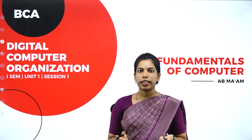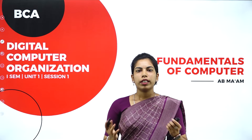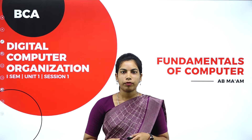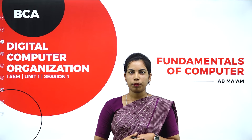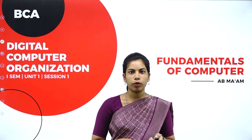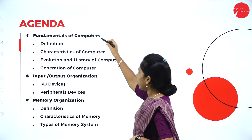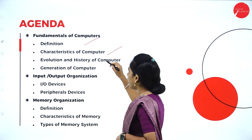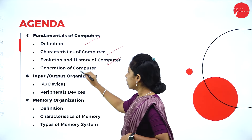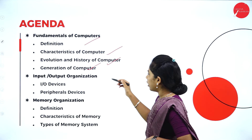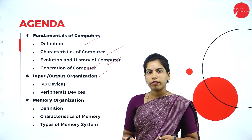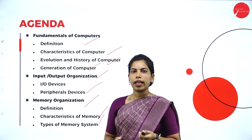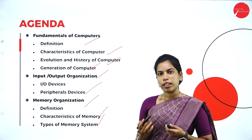In today's session, we get to know what are all the contents under the fundamentals of computers. Fundamentals cover the computer definition, characteristics, block diagram, history and evolution, generations, input and output devices, and memory devices. Today's agenda: definition of the computer, characteristics, evolution and history, generations - there are 5 generations - and input-output devices, peripheral devices, and memory types.